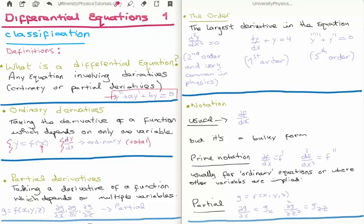This is in contrast to when a function is dependent on more than one variable. If we take g as a function of x, y, and z, we can take three different derivatives — we call them partial derivatives: ∂g/∂x, ∂g/∂y, or ∂g/∂z. A differential equation involving derivatives of a multivariable function is called a partial differential equation. If all derivatives are ordinary derivatives, we call it an ordinary differential equation.